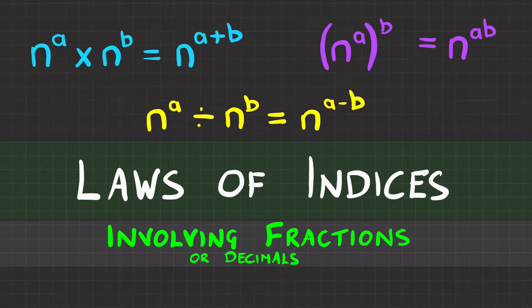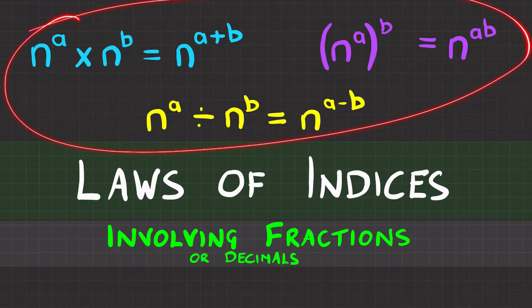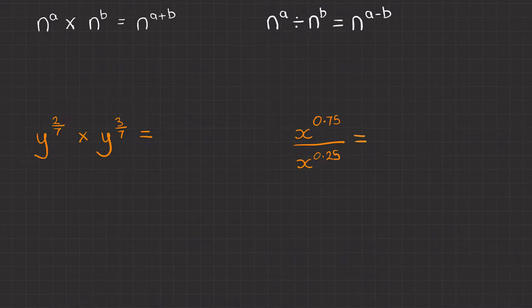Laws of indices involving fractions or decimals. If you've got an indice that involves a fraction or a decimal, it is the exact same process as normal. These laws still apply, it just looks trickier. I'll give you some demonstrations.